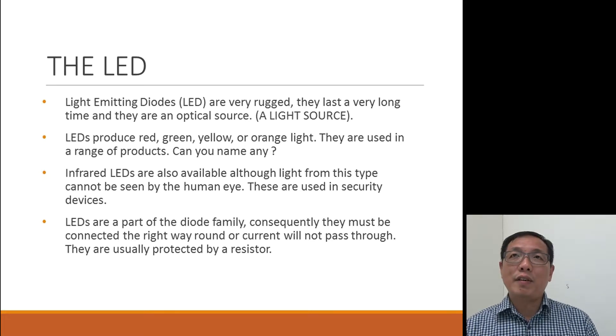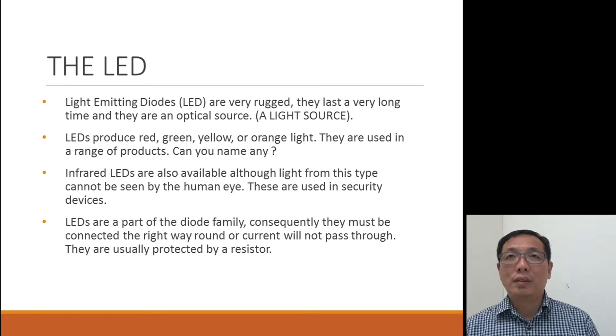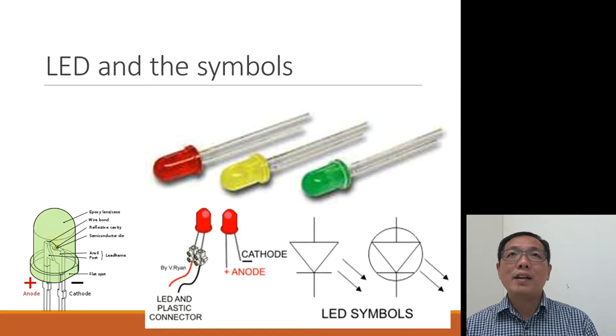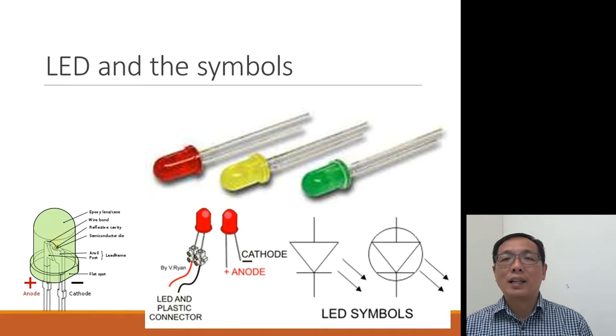So LEDs are part of a diode family and they must be connected in the right way around so that current will pass. If not, current won't flow. What you have here is the LED symbols. And if you see the bottom left-hand corner, what you see is there's an anode and a cathode. Which if you look at the center picture, it shows the anode has a longer leg. The cathode has a shorter one. And more interestingly is if you look at the LED directly, there's a flat spot at the bottom where the rim is and that denotes where the cathode is.